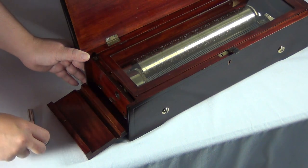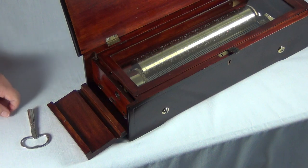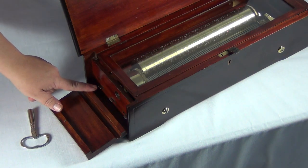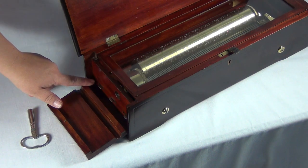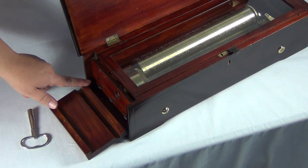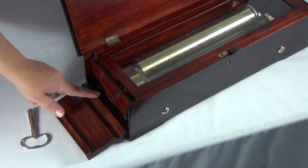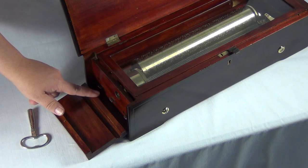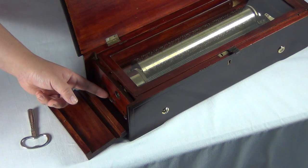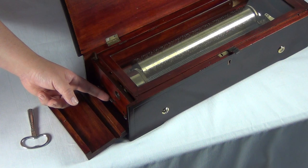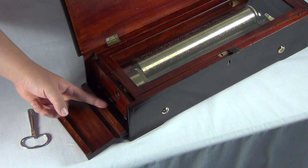Remove the key and now you may play the box. Please note again, this lever in the back position is to repeat the tune. In the front position, it is to play the entire cylinder. When you push this lever, the play lever, to the front, it will play.